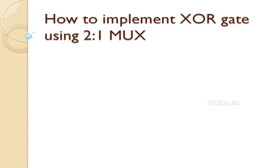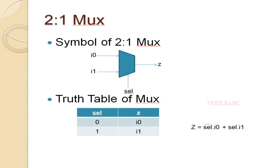Welcome to VHDL Basics. Today we are going to implement an XOR Gate using a 2-to-1 MUX. This is the 2-to-1 MUX simple diagram where I0, I1, and select are the inputs and Z is the output. Looking at the truth table of MUX: whenever select is 0, I0 will be assigned to output Z; whenever select is 1, I1 will be assigned to output Z.